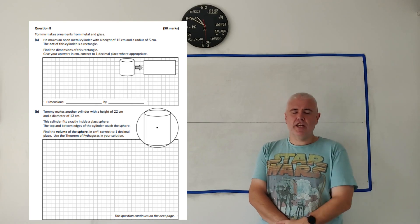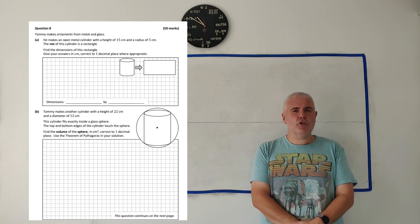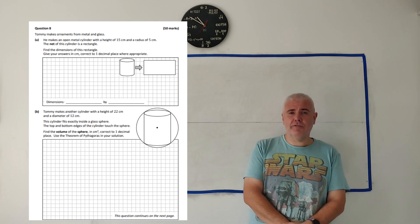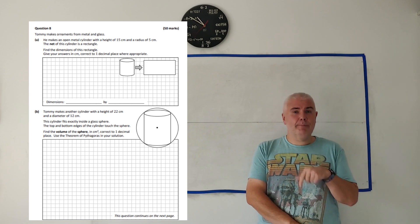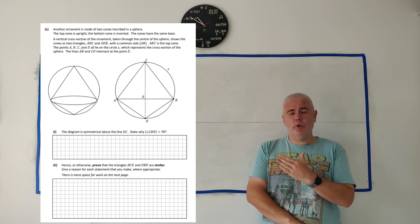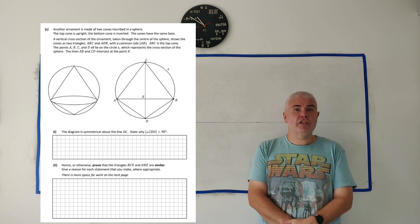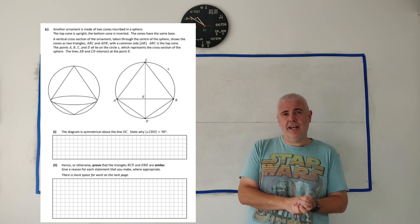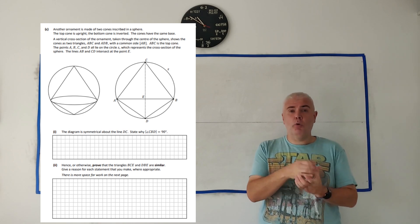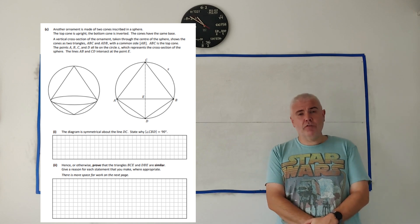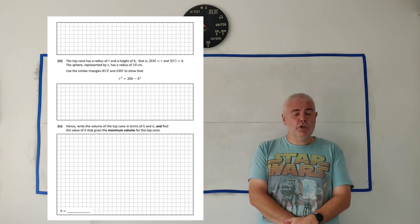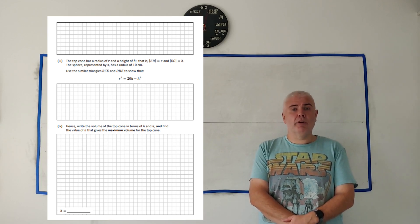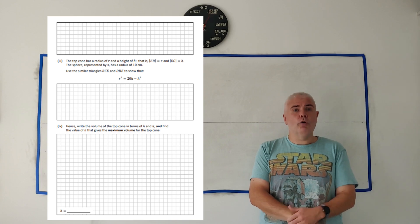In this video I'll be doing the maths question from paper 2 of the 2024 maths Leaving Cert exam. If you're looking for a different question from this paper, check out the playlist in the comments below. I'll be doing all this on a whiteboard, and remember you're on YouTube so take advantage of that — pause, rewind, watch at half speed or 2x speed. If you find these videos useful, a like or subscribe would be greatly appreciated, especially sharing it with a friend doing the Leaving Cert.